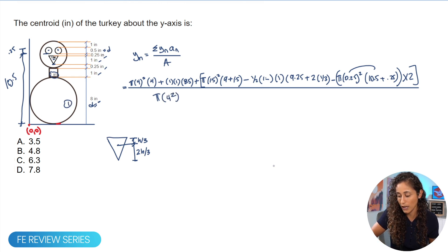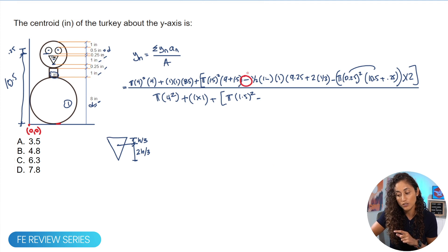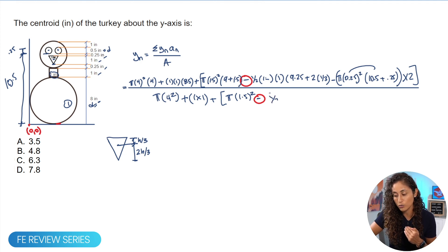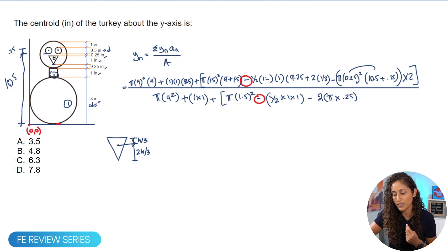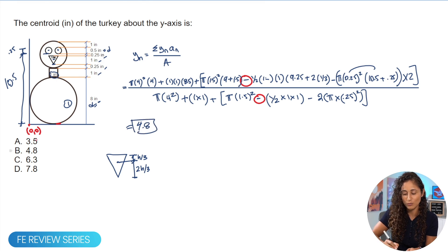For the denominator (total area), we sum: π × 4² (first circle) + 1 × 1 (rectangle) + [π × 1.5² − ½ × 1 × 1 − 2 × π × 0.25²] (second circle minus its interior shapes). Plugging all numbers into the calculator gives a final answer of 4.8, which corresponds to answer choice B.